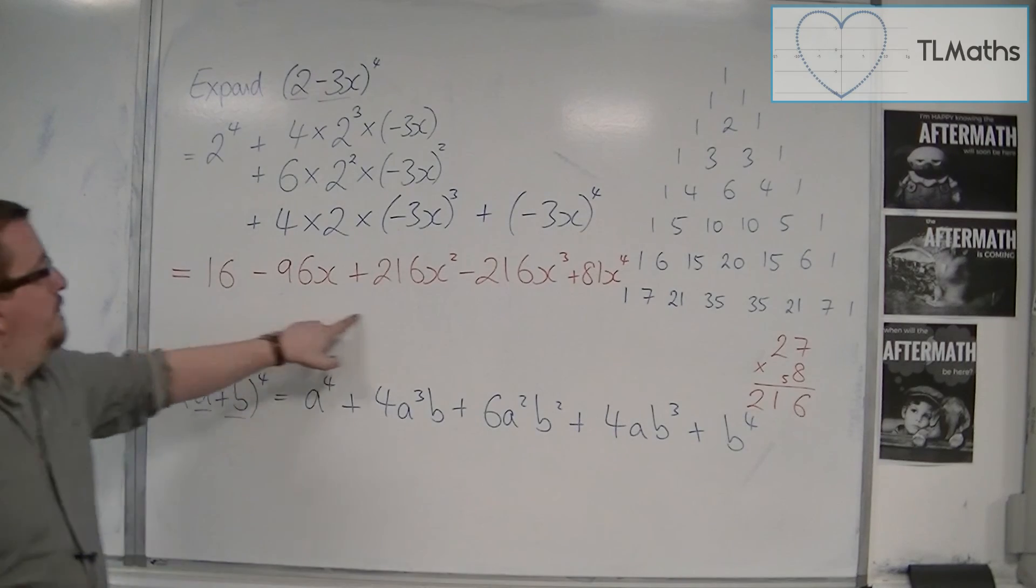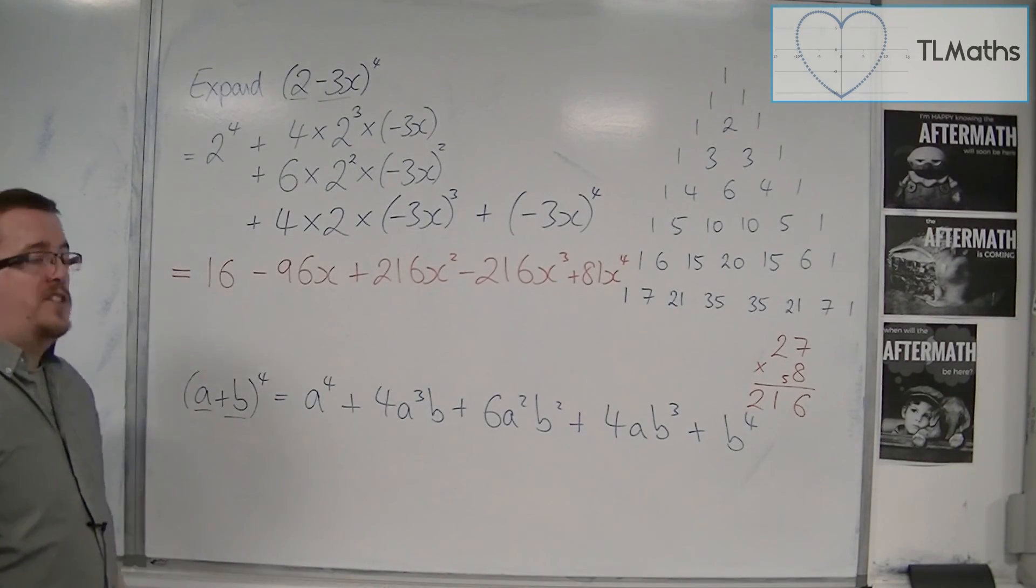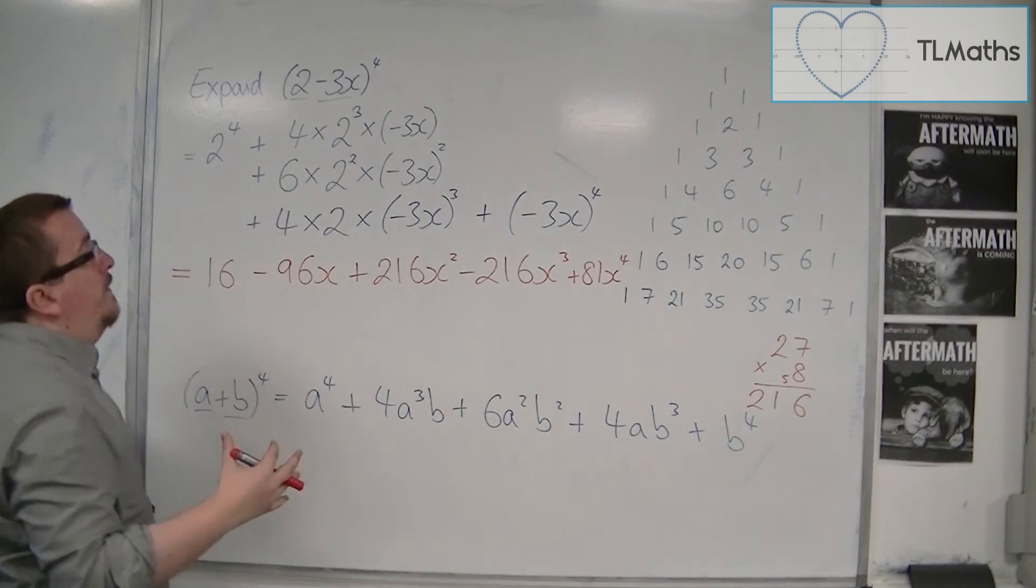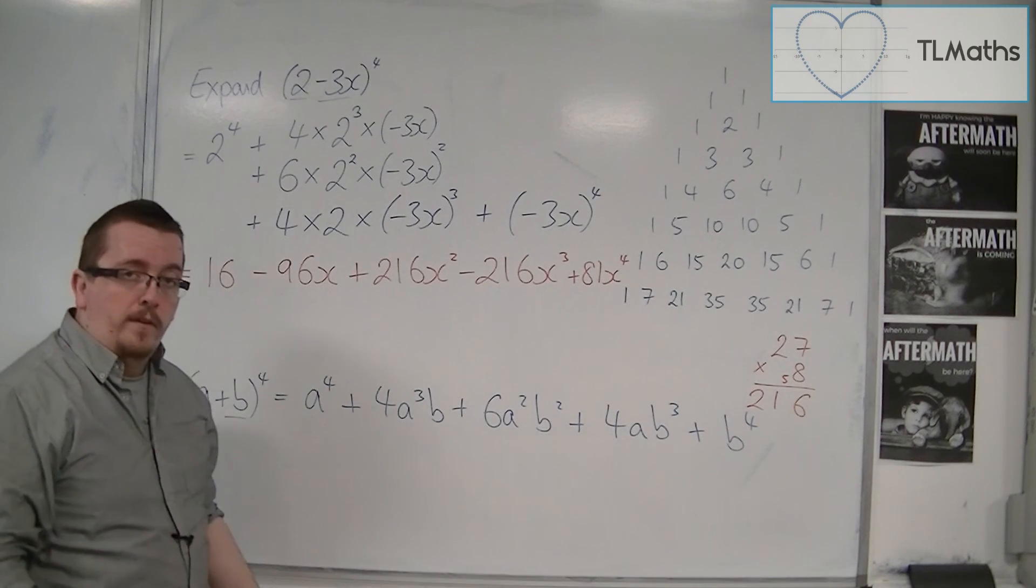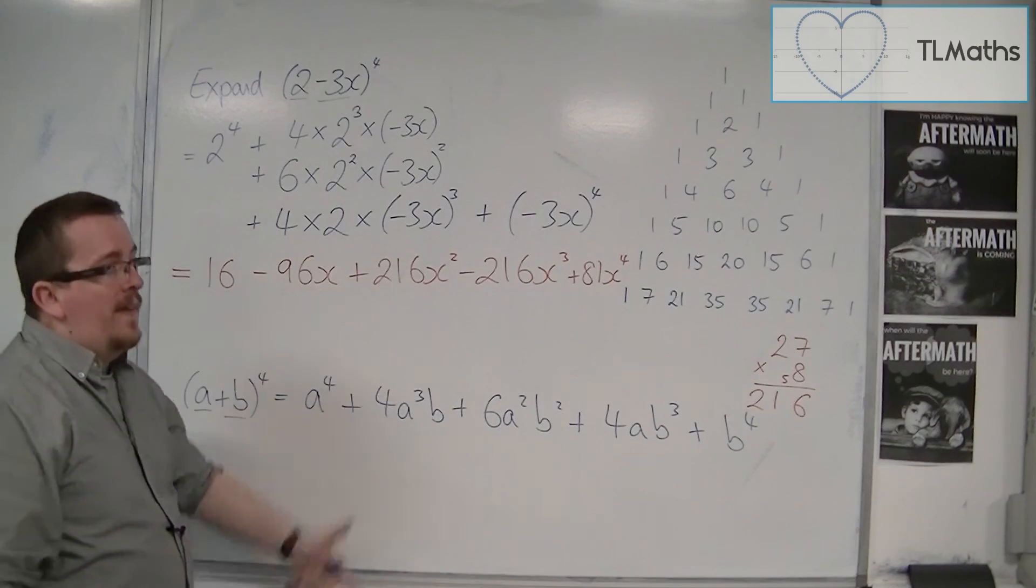And that is the fully expanded form of 2 minus 3x to the power of 4. So it is important that you get used to writing it down in this pattern. It will make things a lot easier for you, and don't forget the brackets.